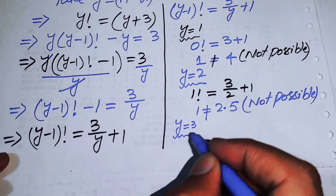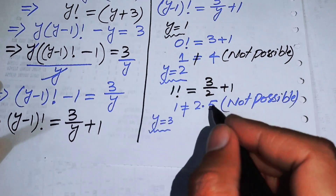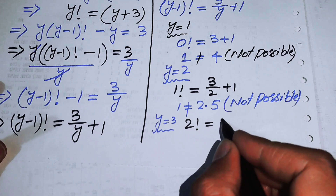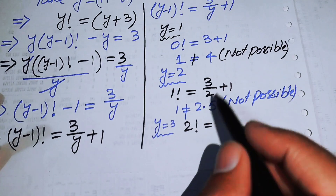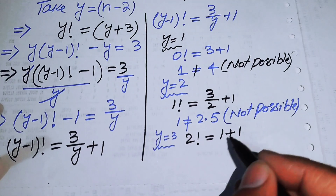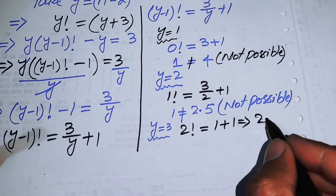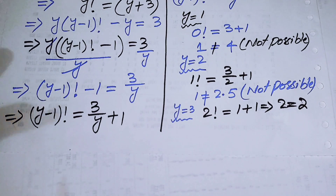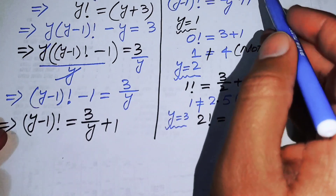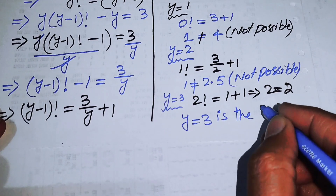We now try y equals 3. Substituting gives (3-1) factorial equals 2 factorial on the left, and 3/3 plus 1 equals 1 plus 1 equals 2 on the right. Since 2 factorial equals 2 and 1 plus 1 equals 2, this satisfies the equation. Therefore y equals 3 is the solution.